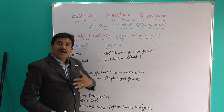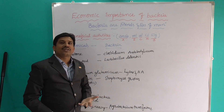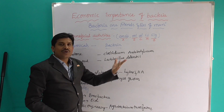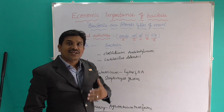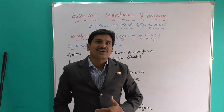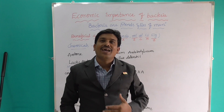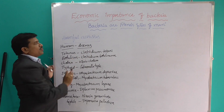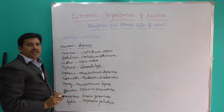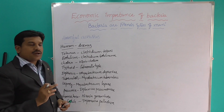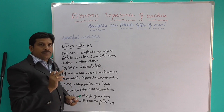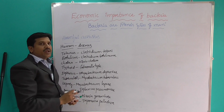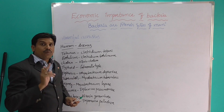So hence bacteria are friends and as well as harmful — harmful bacteria are also present. Let us see the harmful activities of bacteria. Bacteria can harm plants, animals, and cause different food poisoning. We already studied the helpful activities — that is bacteria as friends. Now we are discussing the harmful activities — that is bacteria as foes of man.